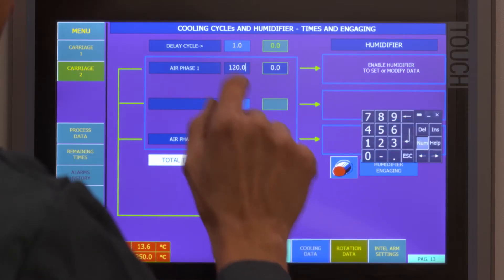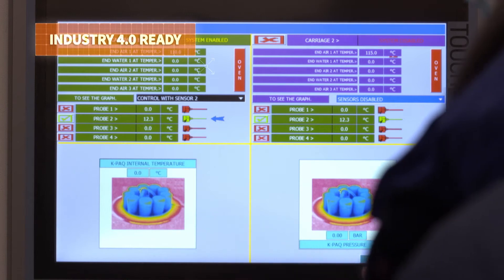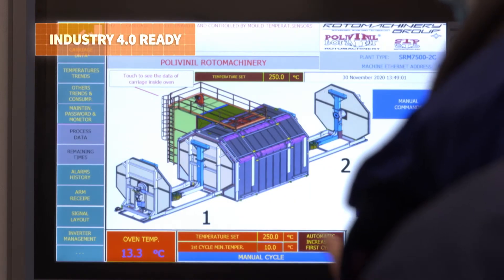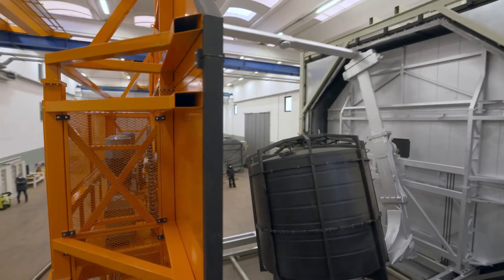The machine is connected to the company network for industry 4.0 integration. It receives the production order, loads the related moulding recipes, and autonomously prepares for production.